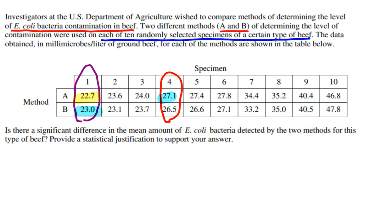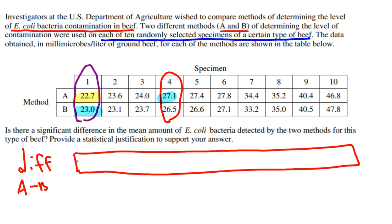In reality, what we're really interested in is making a new list of the differences. You need to pick an order to subtract things. Maybe we'll do method A minus method B. The order doesn't matter. We have 10 specimens, so I'll make a little chart. For example, in the first case, if we subtract 22.7 and 23, we get negative 0.3. Then we continue. If we subtract the next pair, 23.6 minus 23.1, that gives us positive 0.5. That 0.5 is saying method A detected 0.5 millimicrobes per liter extra of contamination in the second specimen.